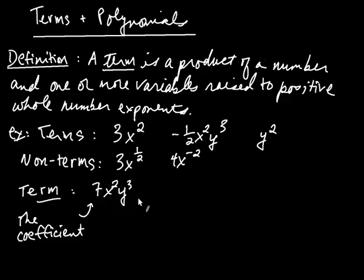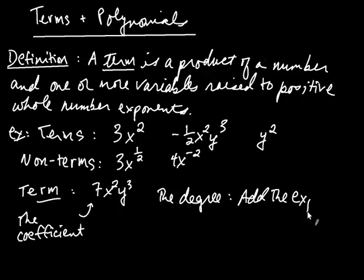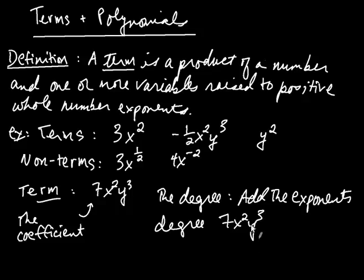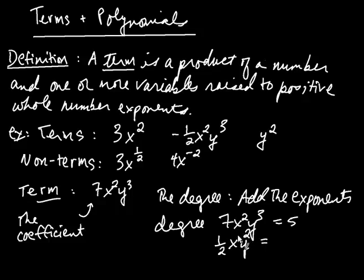Also with a term we have what's called the degree of the term. To get the degree of a term, you add the exponents. So the degree of 7x squared y cubed — you add the exponents 2 and 3 — and get a degree of 5. For something like one half x y squared, this is a little tricky: the exponent of y is 2, but x has an unwritten exponent of 1. So 2 plus 1, the degree of this term would be 3.